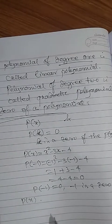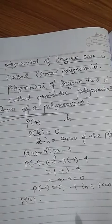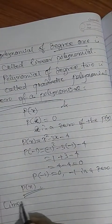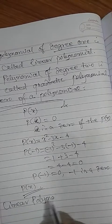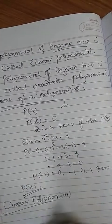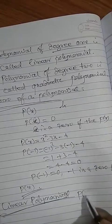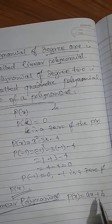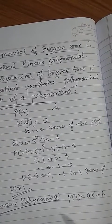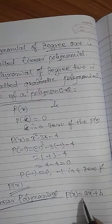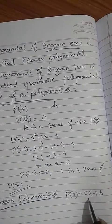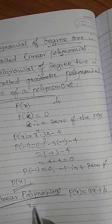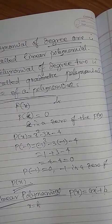Now, what is the general expression of a linear polynomial? The general form of a linear polynomial is ax + b, where x has power 1. If x = k, then P(k) = ak + b.